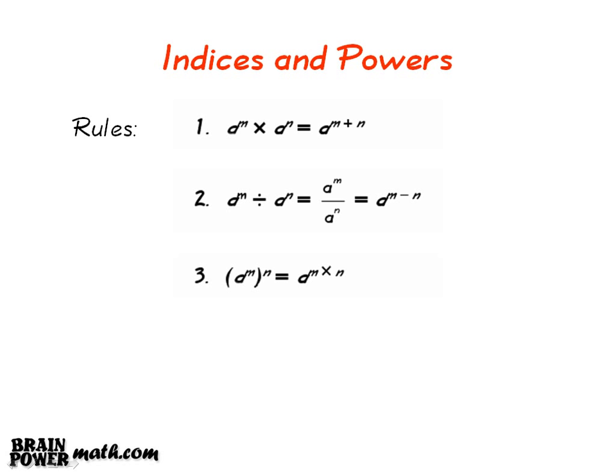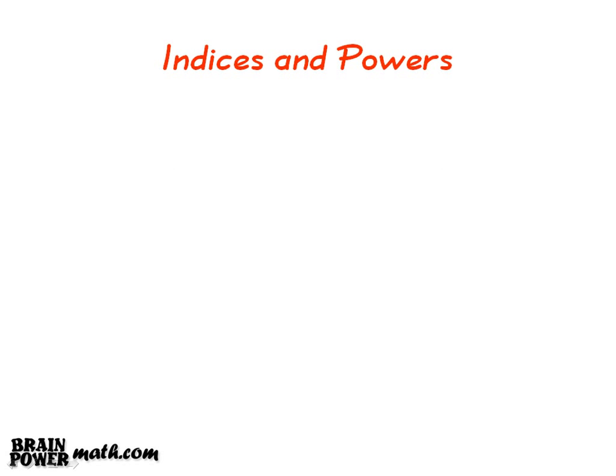Rule 3 states that a to the power of m, all to the power of n, is equal to a to the power of m multiplied by n. Rule 4 states that 1 divided by a to the power of n is equal to a to the power of minus n.